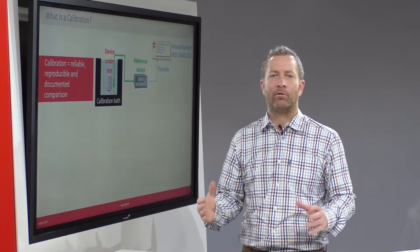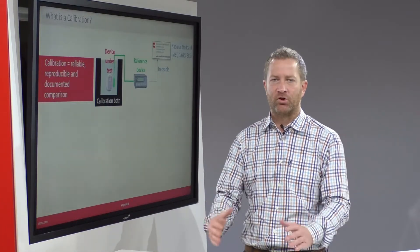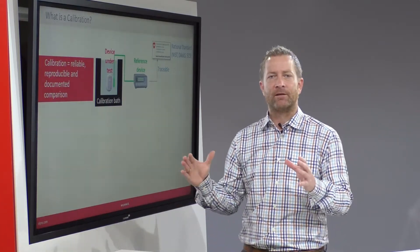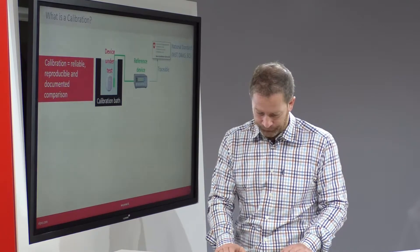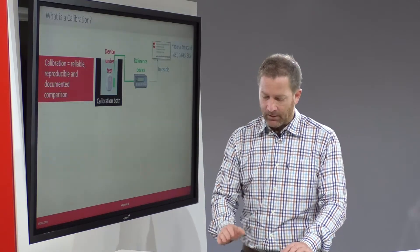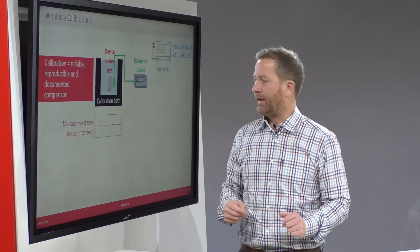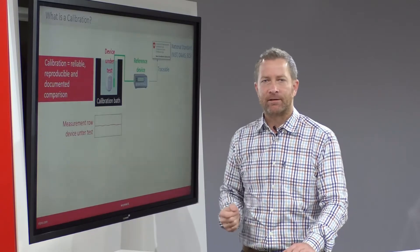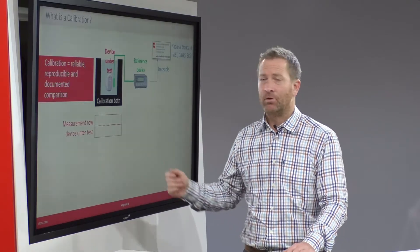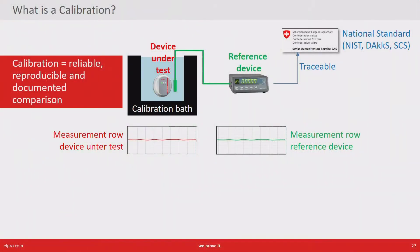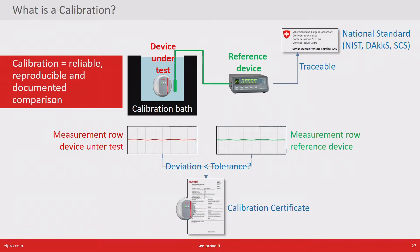A calibration is always performed at one or several temperature points. To perform the calibration we need some sort of device or machine which maintains a stable environment. Afterwards we simply compare the measurement readings of the device under test with those of the reference device, and if the deviation is within the defined tolerance we can issue a calibration certificate.